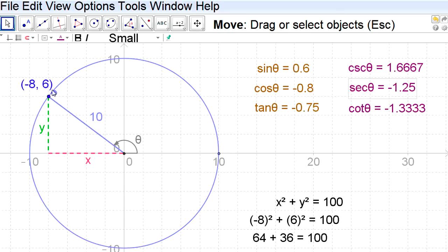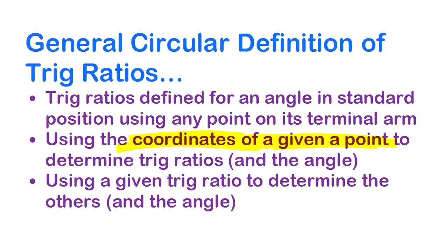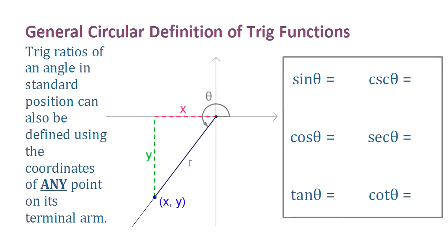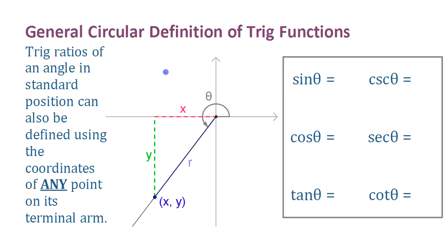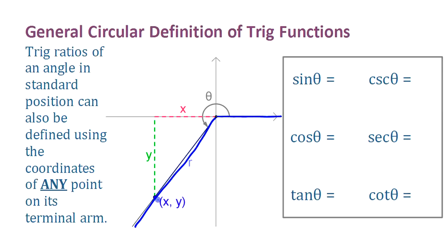That works for any point anywhere, no matter how big the circle is, or whether there's a circle there or not. In general, for those six trig ratios, I don't even have a circle here because it doesn't matter — as long as you have a point on the terminal arm of the angle. Here's the initial arm, here's the terminal arm, and as long as you have that, you can write the ratios.